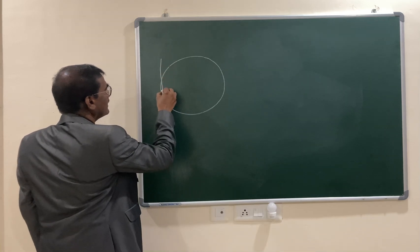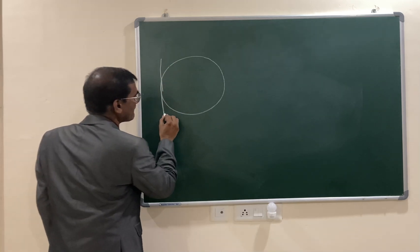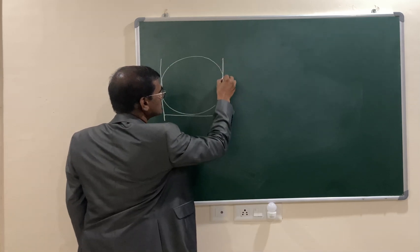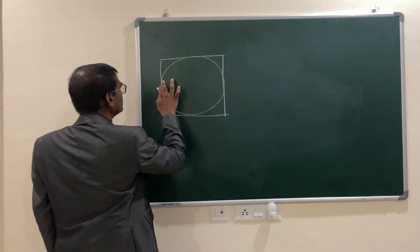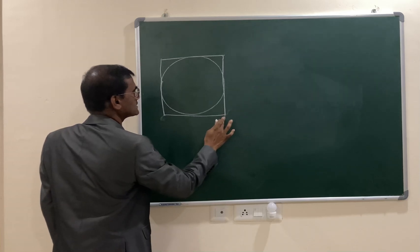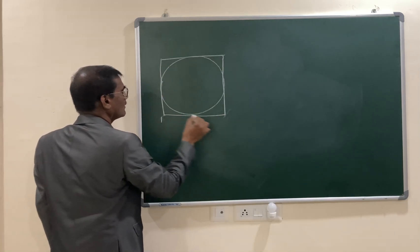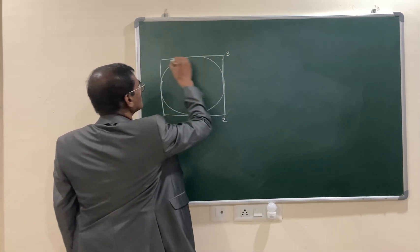Inscribe the circle in a square and let us give names for the corners. Let us call them one, two, three, four.